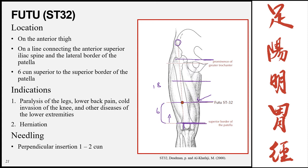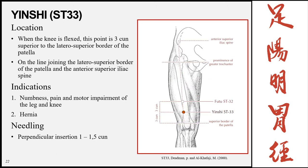Yinshi, Stomach 33, is on the anterior thigh, 3 cun superior to the lateral superior border of the patella, with the knee flexed. Draw a line from the lateral border of the patella to the ASIS, and locate 3 cun above the patella — which is also half the distance between the patella and ST32. Indications include numbness, pain, and motor impairment of the leg and knee, and hernias. Insertion is perpendicular, 1 to 1.5 cun.